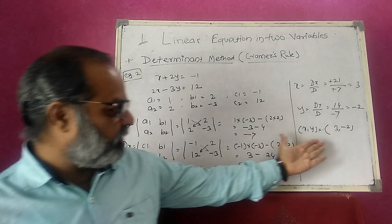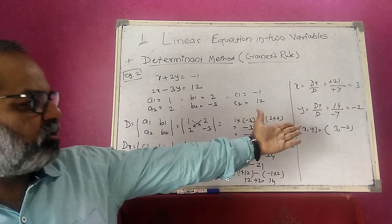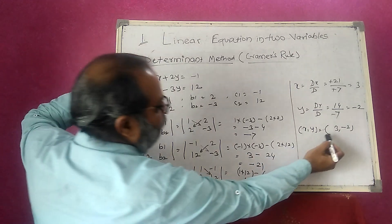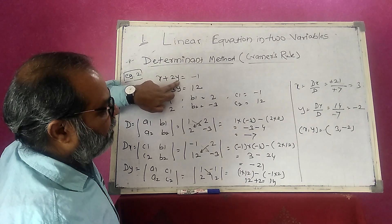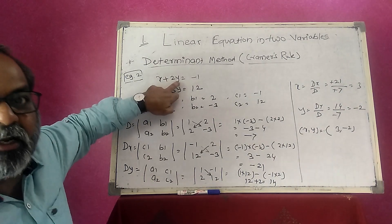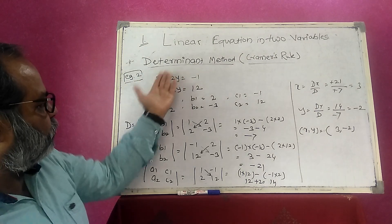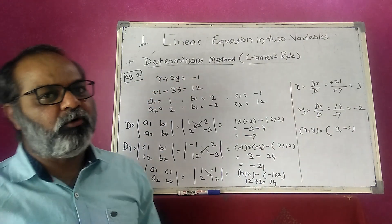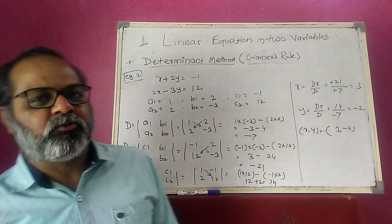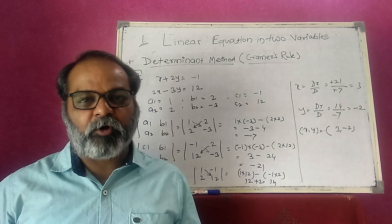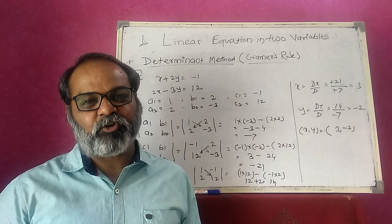We verify the solution by substituting into the first equation: x + 2y = 3 + 2×(minus2) = 3 minus 4 = minus 1. Left-hand side equals right-hand side, so our solution is correct. I hope you understand. If you have any problem or query, just comment and I will definitely solve it. Thank you.